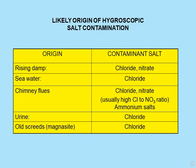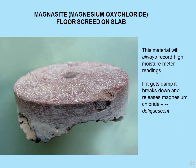Likely origins of contamination: rising damp produces chloride and nitrate; seawater produces chloride; chimney flues produce chloride and nitrate, usually with a high chloride-to-nitrate ratio, plus ammonium salts; urine produces loads of chloride; and old magnesite screeds contain magnesium oxychloride. Magnesite floor screeds on a slab always record high moisture meter readings even when regarded as dry, but if they get damp they break down and release magnesium chloride, which is deliquescent.